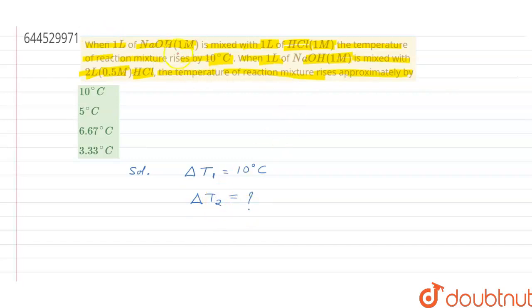If you see the question, you can find that the number of moles when used in the first case in HCl and NaOH both are the same. In the second case also, when one liter of NaOH is mixed with two liters of 0.5 molar HCl, the number of moles are also the same.